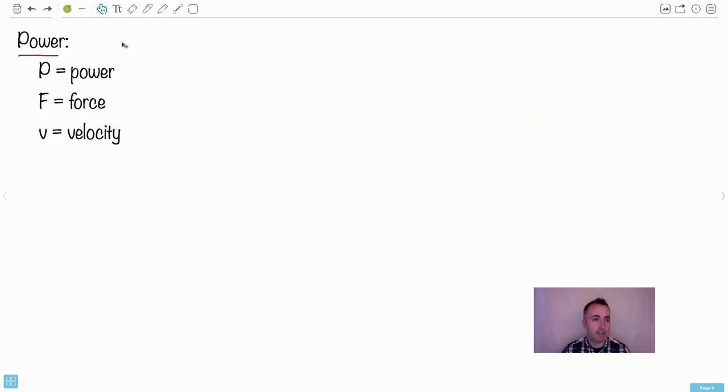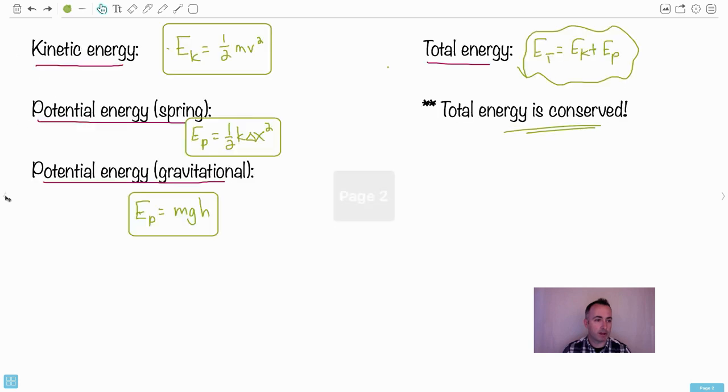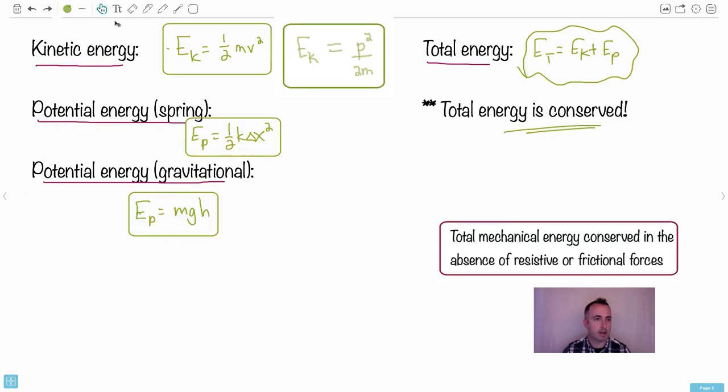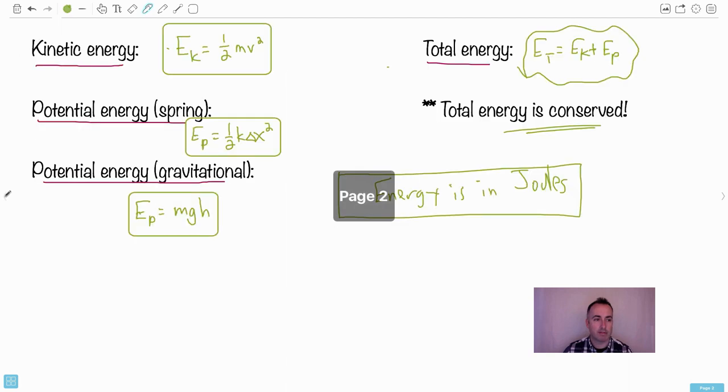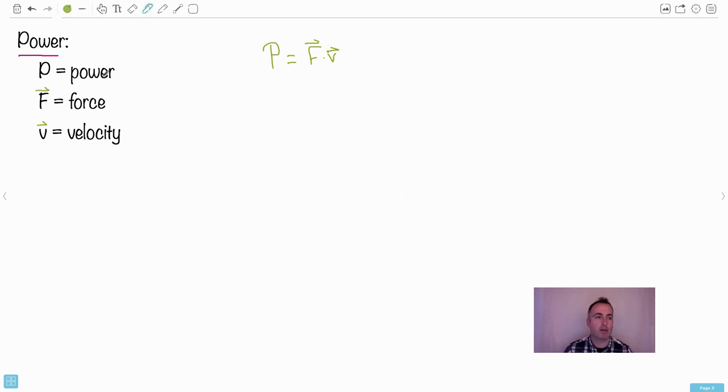Power. By the way, I didn't mention energy is measured in joules. Let's put that in there, that's important. Now we have power. We use the letter P for power, capital P. The main equation is power equals FV, force times velocity.